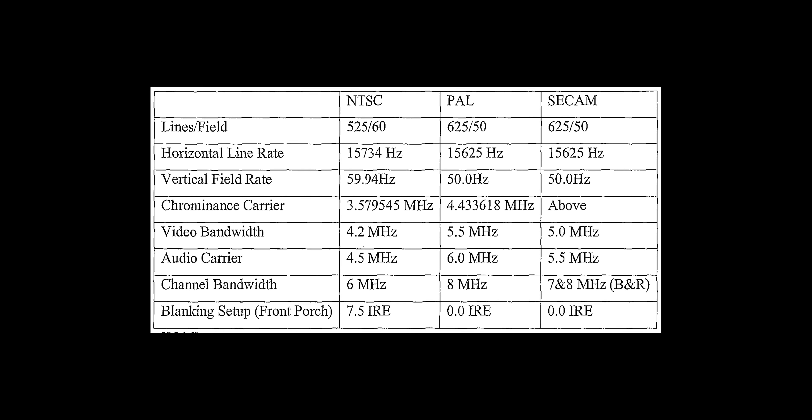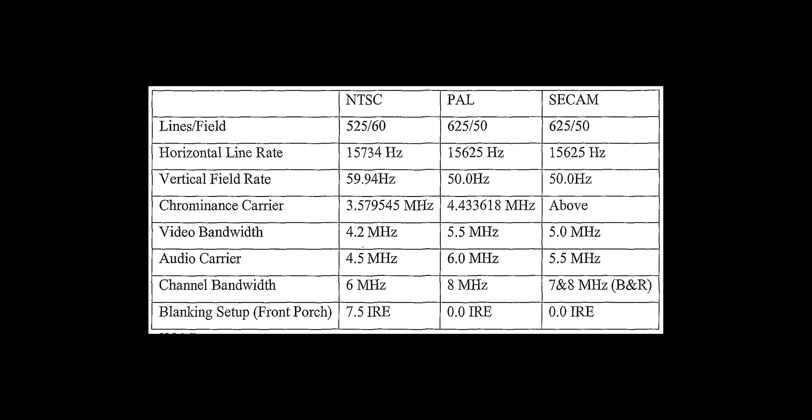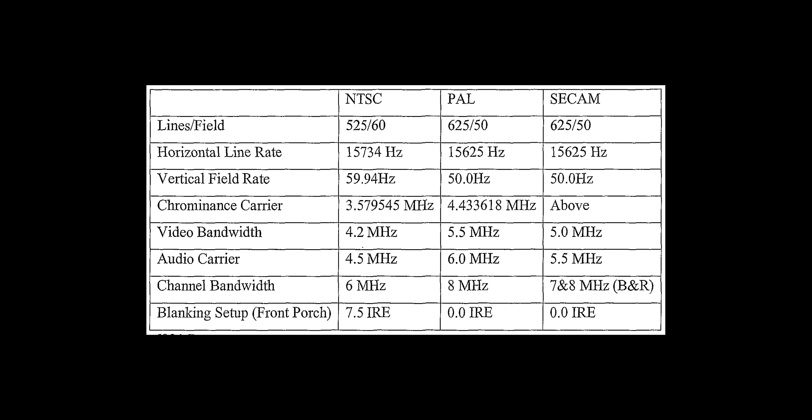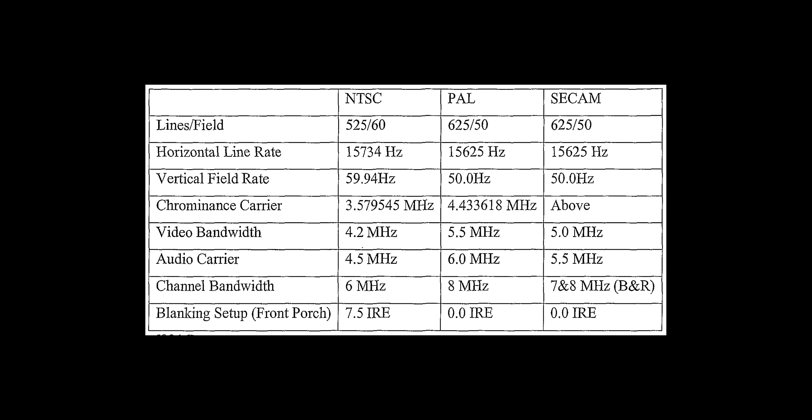Lights can also flicker — their power frequency could be at 50Hz or 60Hz, and if you're in slow motion trying to dial in the correct shutter speed, those lights may flicker. I've seen a lot of people on YouTube, especially in Australia, getting flickering lights because they're using NTSC in a PAL region.